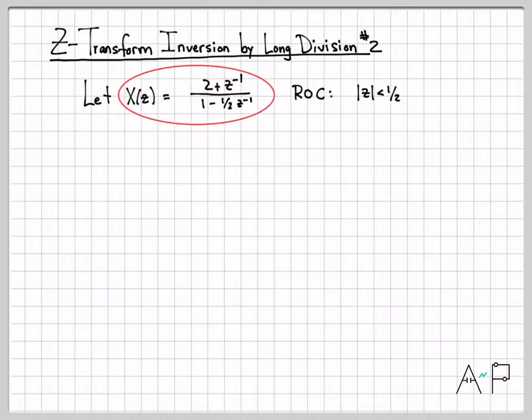So the x of z that we're going to be working with is exactly the same: 2 plus z to the negative 1 divided by 1 minus 1 half z to the minus 1. However, I have flipped the region of convergence. Previously, our region of convergence was magnitude z bigger than a half. Now it's magnitude of z less than a half, which tells me this has to be a left-sided signal.